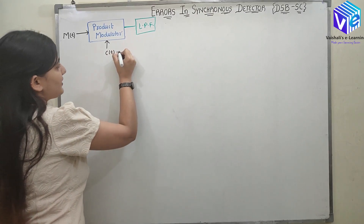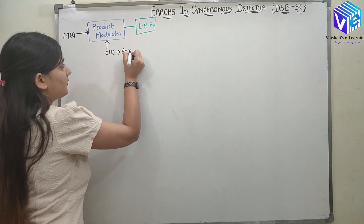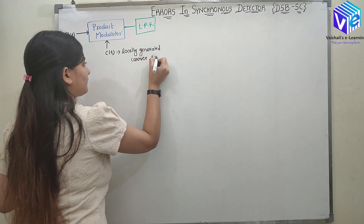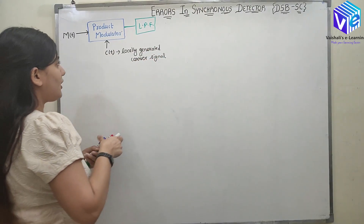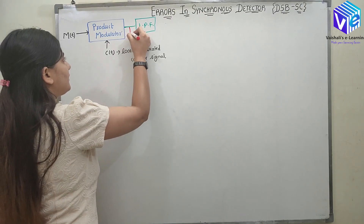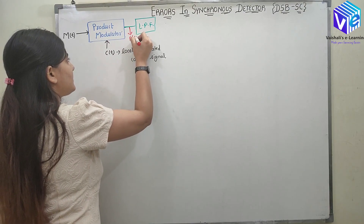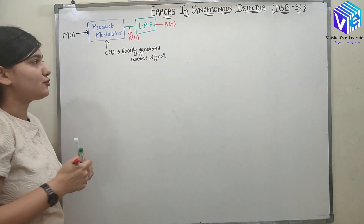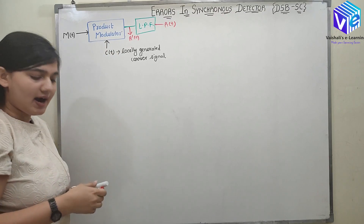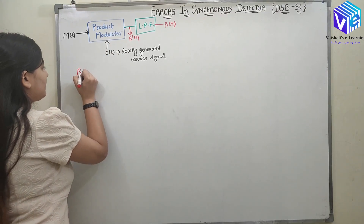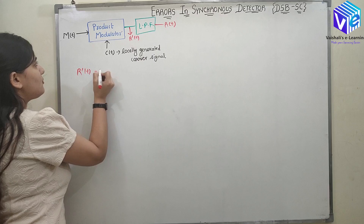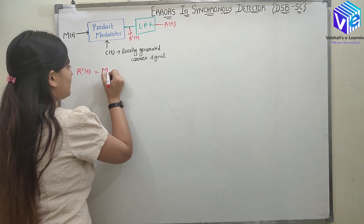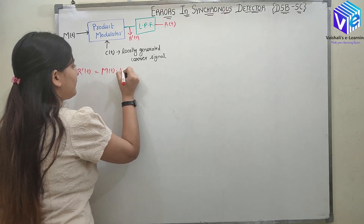C(t) is the locally generated carrier signal. From the product modulator I will get an output R'(t), and after the low pass filter I will get the output R(t). Now R'(t) would be equal to what the product modulator is doing — it is just multiplying its two inputs, so it is multiplying M(t) with C(t) to get R'(t).